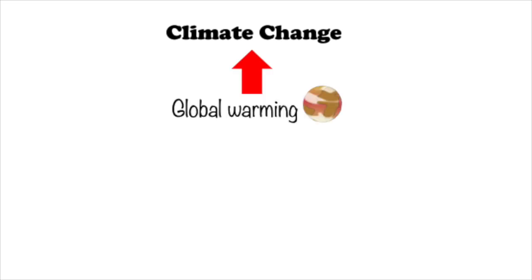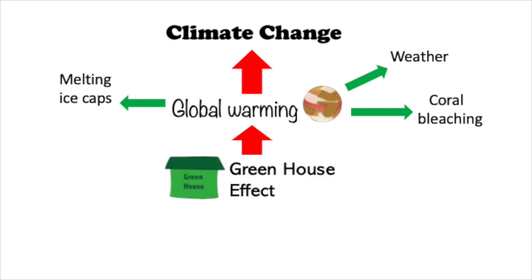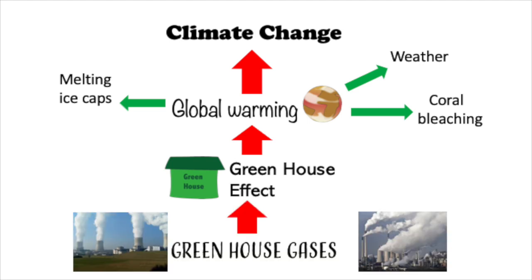Let's summarize what we've discussed. Climate change is being caused by global warming, meaning the earth's temperatures have increased. Global warming is causing the polar ice caps to melt, is causing unusual weather events, and causing coral to be bleached. The greenhouse effect is causing global warming, and an excess of greenhouse gas emissions is causing the greenhouse effect.